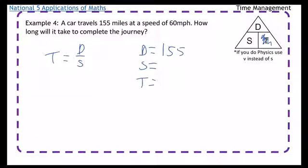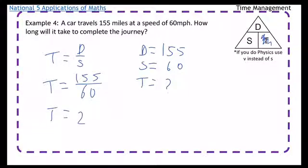So distance is 155. Speed is 60. And time, we're not sure. So time equals 155 over 60. Time equals. When you do that, you get 2.58333. It goes on.